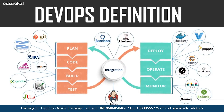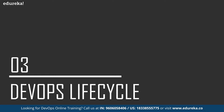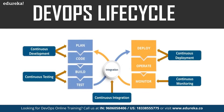The aim of DevOps is to shorten the systems development lifecycle while delivering features, fixes, and updates frequently in close alignment with the business objectives. As you can see in this diagram, these are the various tools used in DevOps. Now let us have a look at the DevOps lifecycle. As you can see in this diagram, these are the various phases: continuous development, continuous testing, continuous integration, continuous deployment, and continuous monitoring. Let us have a look at each of these phases one by one.